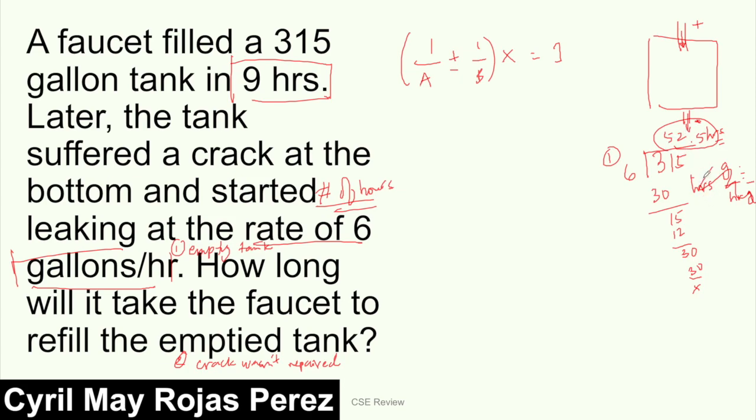Now why will this be different from before? Earlier we had the rate, but we're looking for the number of hours. So our formula will also be different. The formula becomes 1/9, which is the 9 hours of the faucet, positive because water is flowing in, minus 1/52.5. It's minus because the crack subtracts water, not adds it.